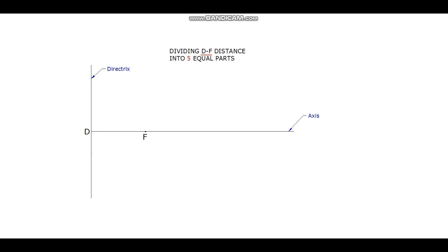For dividing DF into 5 parts, an incline line is to be drawn from D. It can be drawn at any acute angle, but it will look good if it is maintained between 20 to 30 degrees. With the help of compass and taking any convenient distance, 5 points can be marked on this line. These points are marked with numbers 1 to 5.